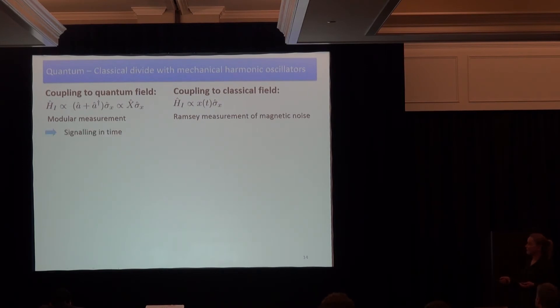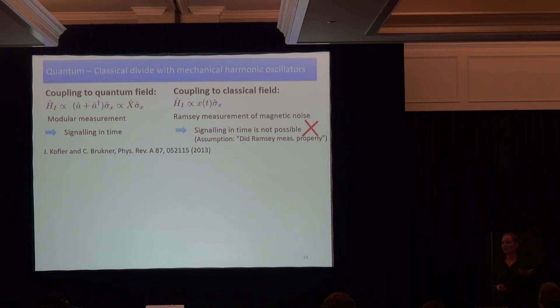We have seen that I can make these measurements signaling in time. Now we can think about the coupling to a classical field. And if we think about it, we measure this classical field once, we will not change it. And I mean, I put here magnetic noise because that's the most well known for the ion trap. We will not change our magnetic noise field by this first measurement. And this will not allow us to signal to measurement B. Of course, this is only true if we do our Ramsey measurement properly and don't do anything weird.